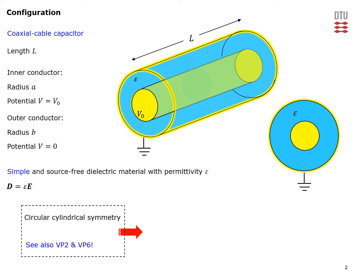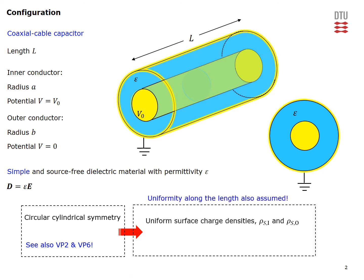Because of the circular cylindrical symmetry — and you can view all the details behind the consequences of cylindrical symmetry in video problem 2 and video problem 5 — the induced surface charge densities on the surface of our inner and outer conductors will be uniformly distributed. Moreover, we will assume a uniform distribution of charge along the length of our coaxial cable capacitor.